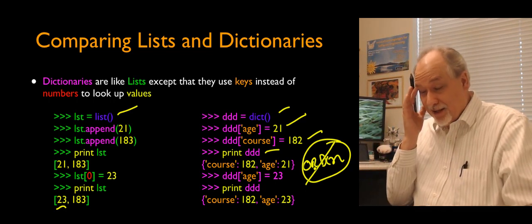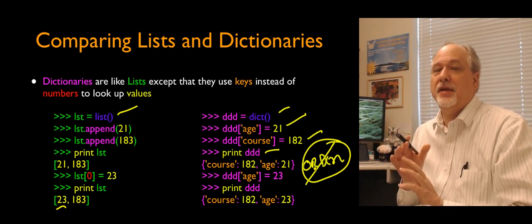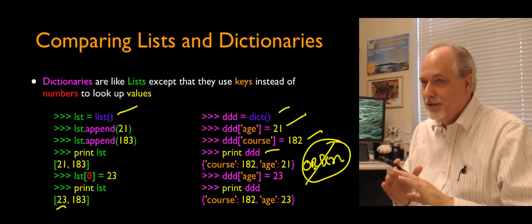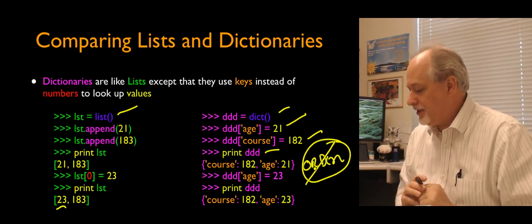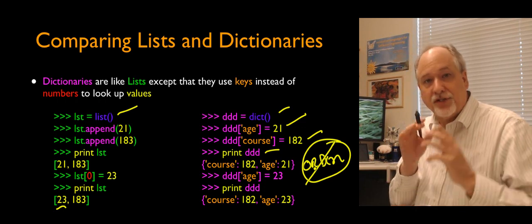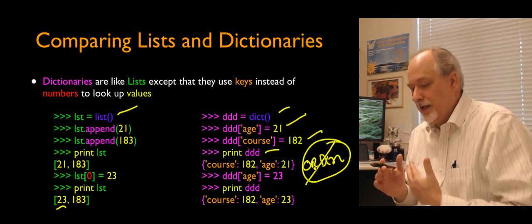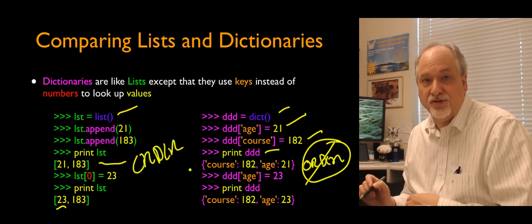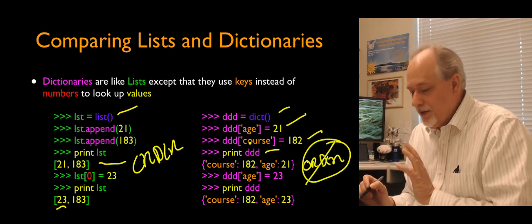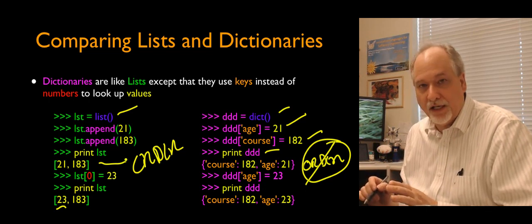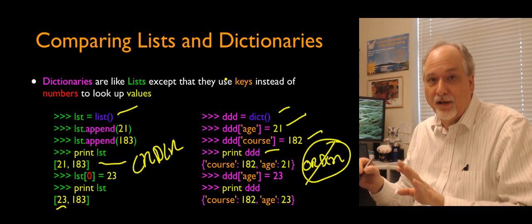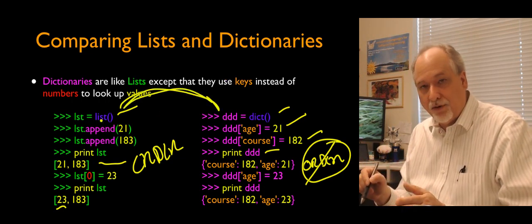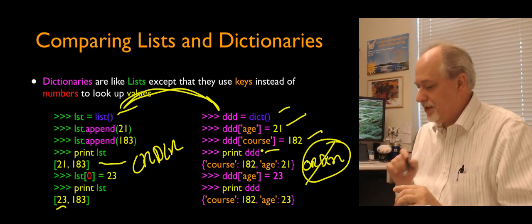The lack of order is a compromise that makes dictionaries fast, using a technique called hashing — that's how it actually works internally. The thing that matters to us as programmers is that lists maintain order and dictionaries do not. They're very complementary — different kinds of data are better represented as a list or as a dictionary depending on the problem you're trying to solve.